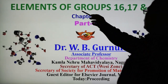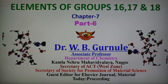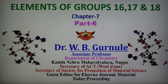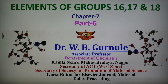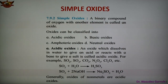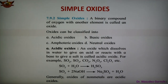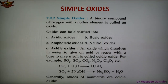Today's topic is the elements of group no. 16, 17 and 18, chapter no. 7, part 6. Today we are discussing simple oxides. Oxides are the binary compound of oxygen with an element, and this new compound formed is the oxide. Oxides are 4 types: acidic, basic, amphoteric, and neutral oxides.